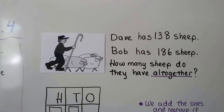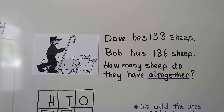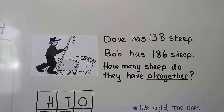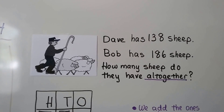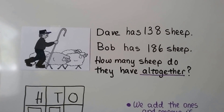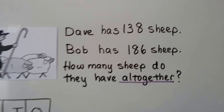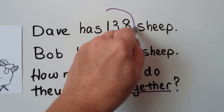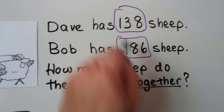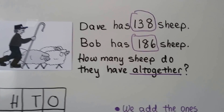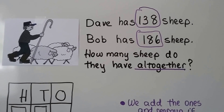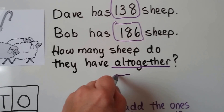So here we have a word problem. Dave has 138 sheep. Bob has 186 sheep. How many sheep do they have all together? Well, the first thing we need to do for a word problem is identify the important numbers. Dave has 138 sheep, Bob has 186 sheep. Then we need to look for clue words that tell us which operation to use, and I see the clue word 'all together', and it tells us we need to add.